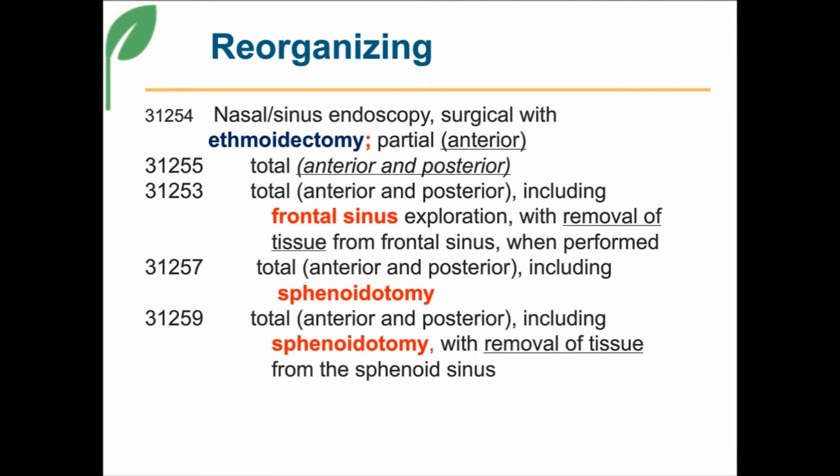These codes are out of order — that's just the way they are in CPT. Code 31253 is not only a total ethmoidectomy, but the physician has also reached into the frontal sinus area, either exploring or taking tissue or both. If the physician goes into the sphenoid and makes an incision — a surgical opening to the sphenoid sinus — that's code 31257. If the physician also takes tissue, that would be code 31259. This builds, so if you do both frontal and sphenoid, you'll have more than one code based on the documentation.